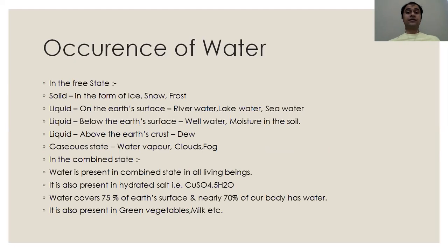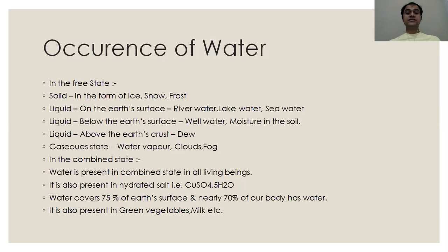Occurrence of water — where can water be found? Two possibilities: either in free state or combined state. In free state, water exists in three states of matter — solid, liquid, and gas. In solid form, it is ice, snow, or frost. In liquid form on the earth's surface it is river water, lake water, or sea water; below the earth's surface it is well water or moisture in the soil; and above the earth's crust it is dew. In gaseous state, water exists as water vapor, clouds, or fog.